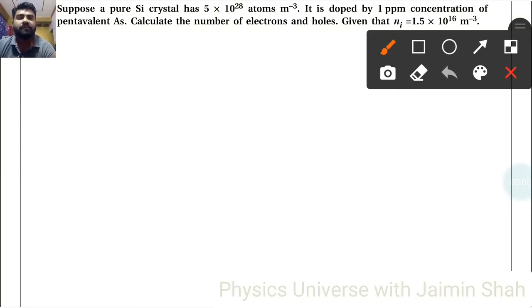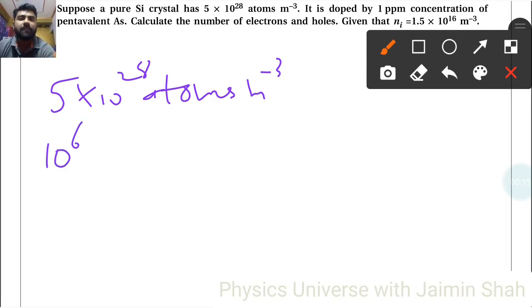Suppose a pure silicon crystal has 5×10²⁸ atoms/m³. It is doped by 1 ppm, which means 10⁻⁶. So the number of electrons ne equals 5×10²⁸ divided by 10⁶, which equals 5×10²².